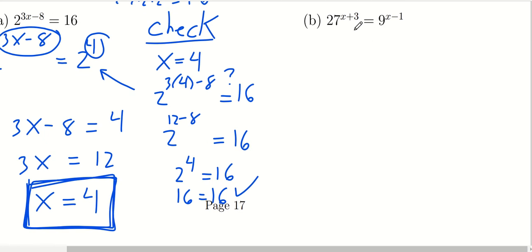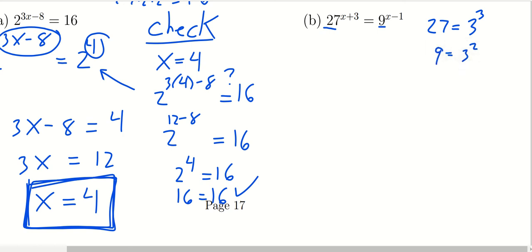In part b, we want to solve 27 raised to the x plus 3 power equals 9 raised to the x minus 1 power. We have two different bases: 27 and 9. It's not convenient to write 27 as a power of 9, nor 9 as a power of 27. However, both 27 and 9 are powers of 3. We know that 27 equals 3 to the 3rd power, and 9 equals 3 squared, so we can rewrite both bases as a common base of 3.